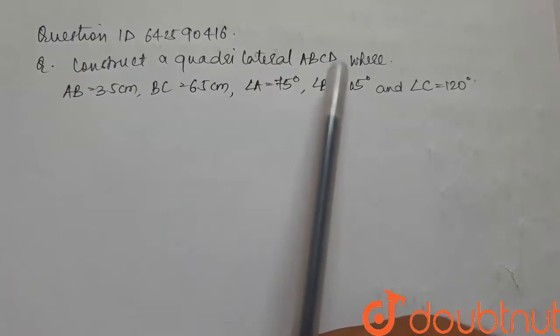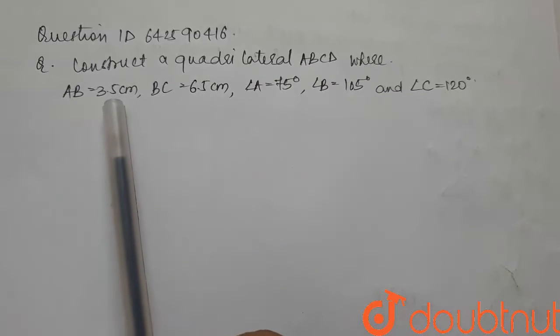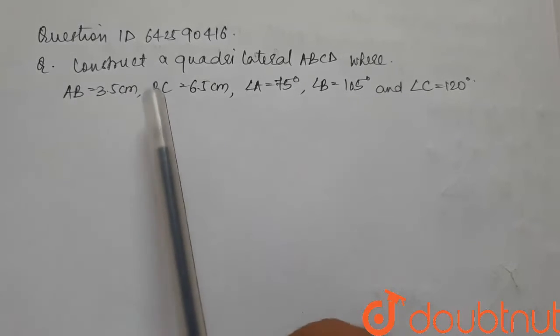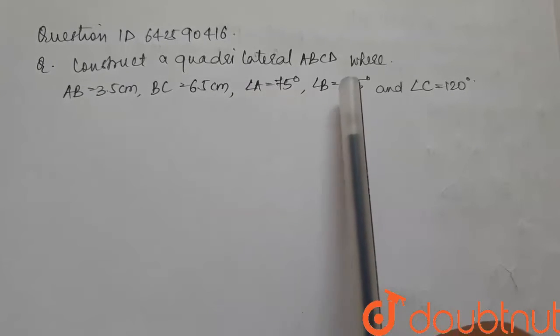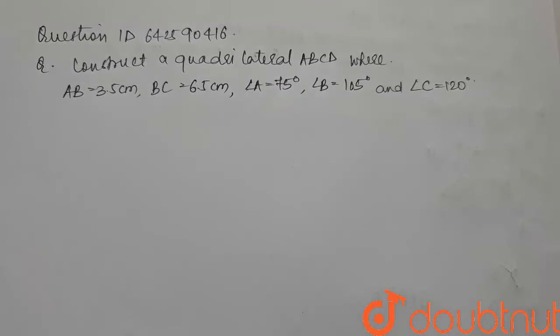Construct a quadrilateral ABCD where AB is 3.5 cm, side BC is 6.5 cm and angle A is 75 degrees, angle B is 105 degrees and angle C is 120 degrees.